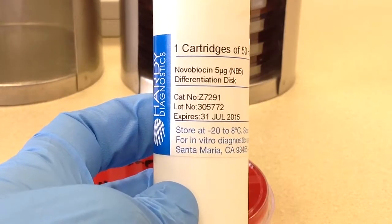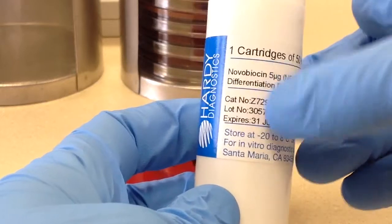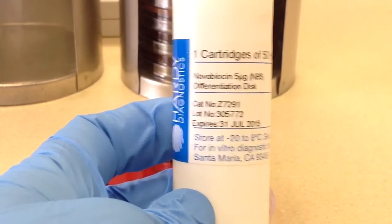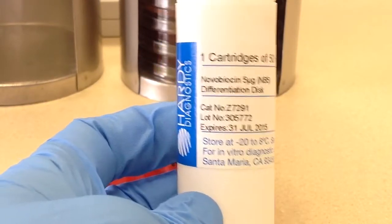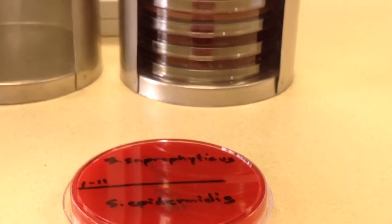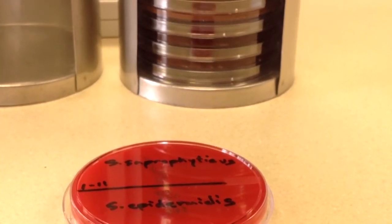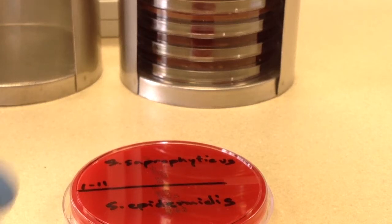we're going to do a novobiosin disc. And novobiosin is used to differentiate coagulase negative staphylococci. We're going to be using staph saprophyticus and staph epidermidis.